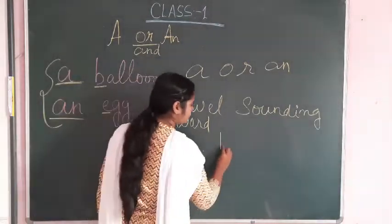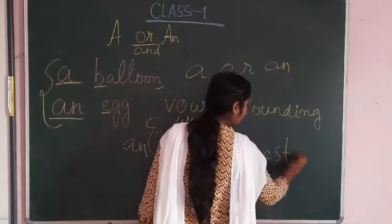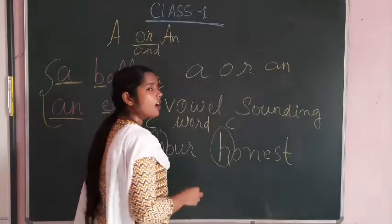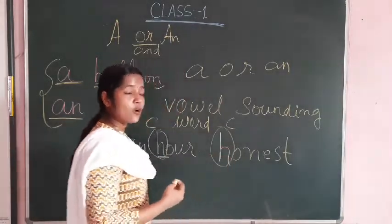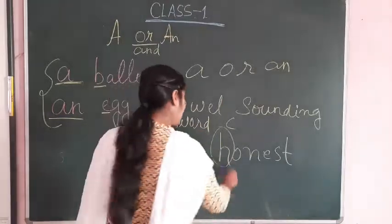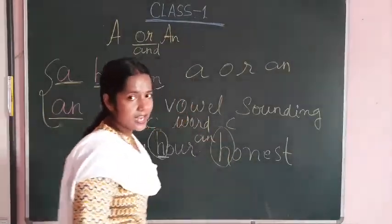So it will be a vowel sounding word. So it will be a vowel sounding word and for that we will use An. Second example: honest. This is a consonant. Everyone knows this is a consonant, but the vowel sounding word makes it 'an honest'. So it will be O. We will use An for honest. This is a second rule.